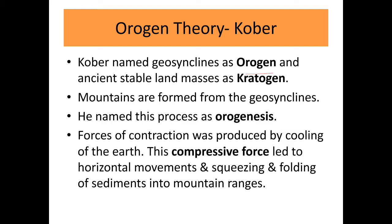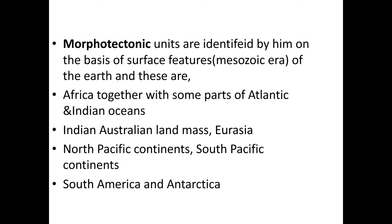Kober's orogeny theory names geosynclines as 'orogen' and ancient stable rigid landmasses as 'kratogen.' Orogens are water bodies surrounded by kratogen, which are stable, rigid ancient landmasses. Mountains are formed from these geosynclines, and Kober named this process 'orogenesis.' Forces of contraction produced by cooling of the earth caused horizontal movements, squeezing and folding of sediments in the geosynclines into mountain ridges.